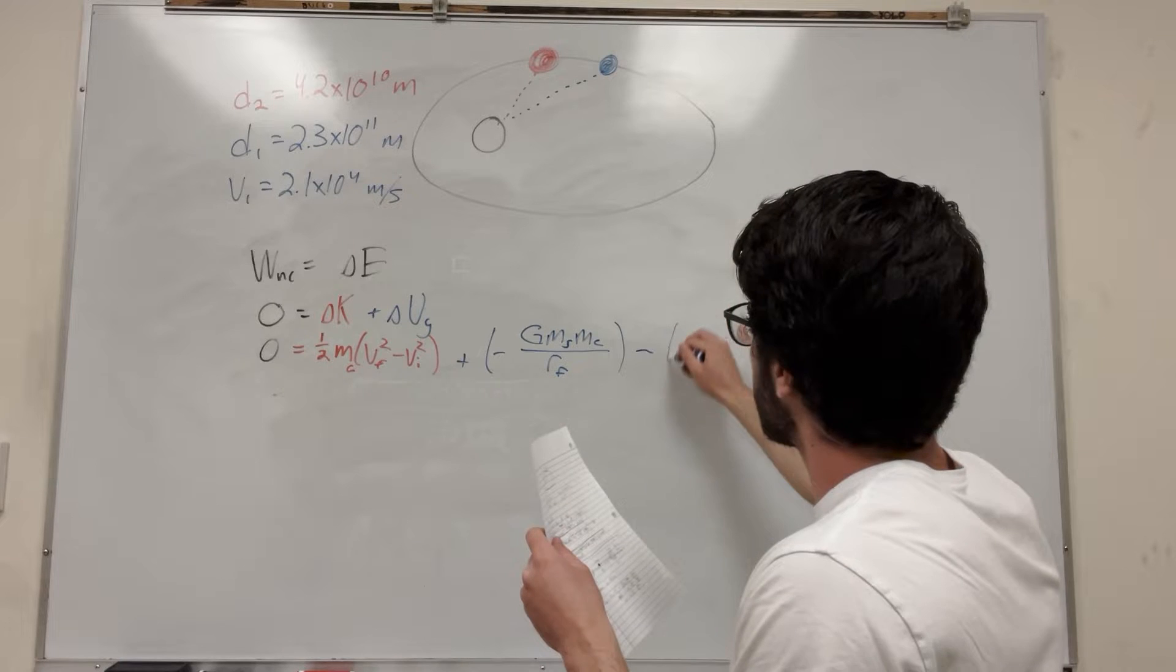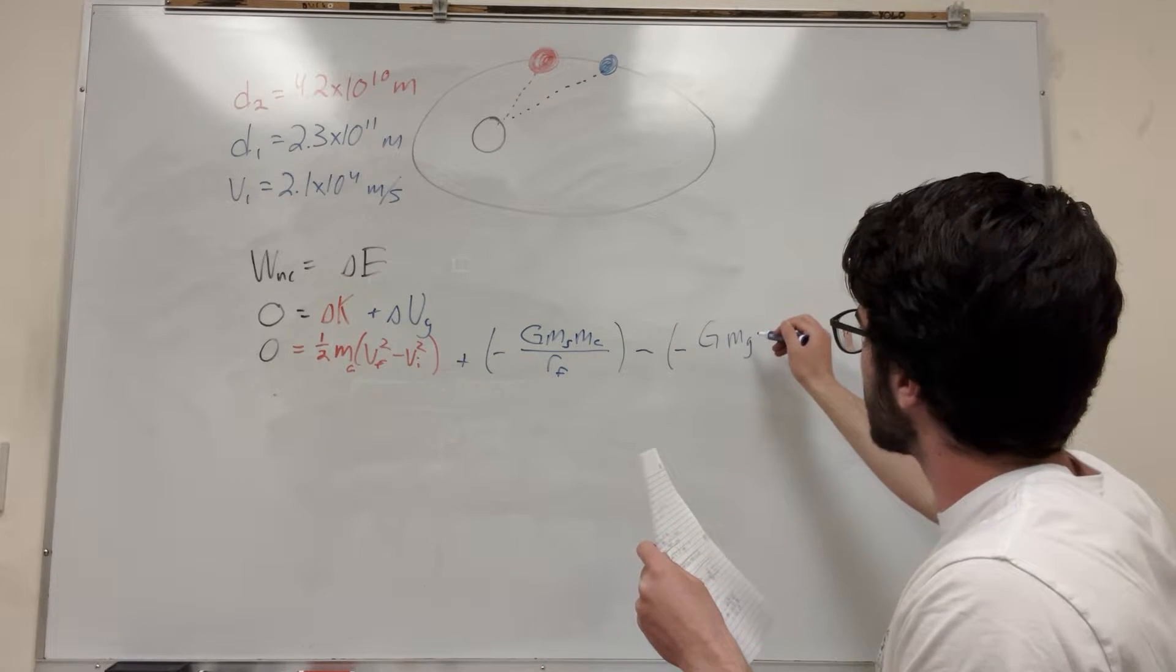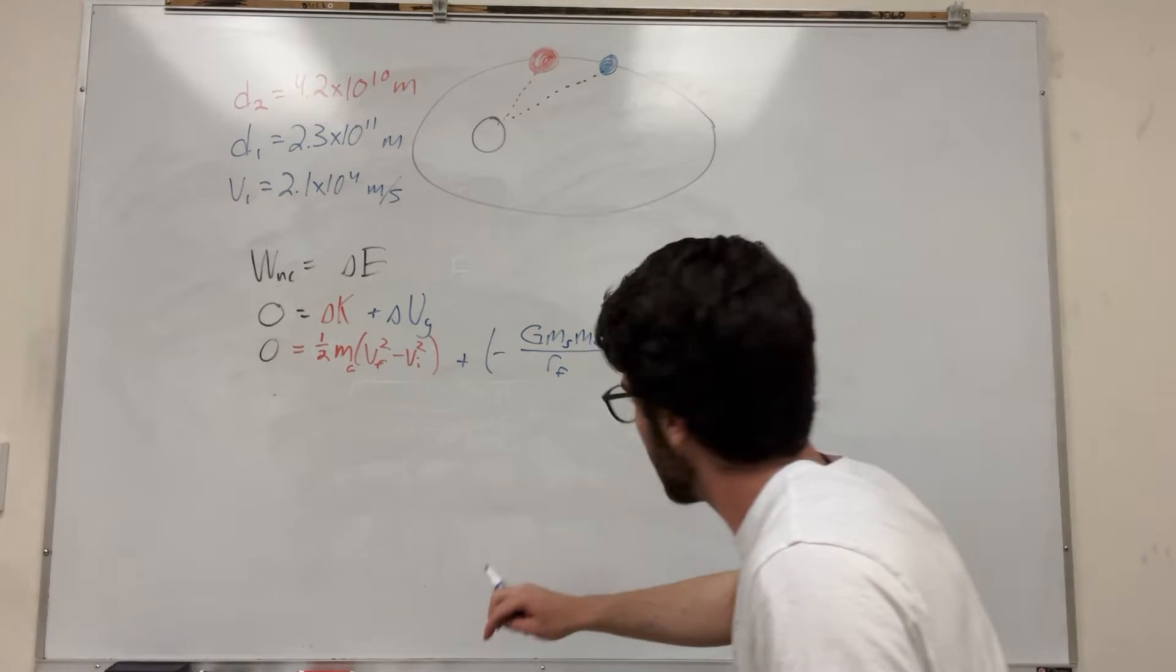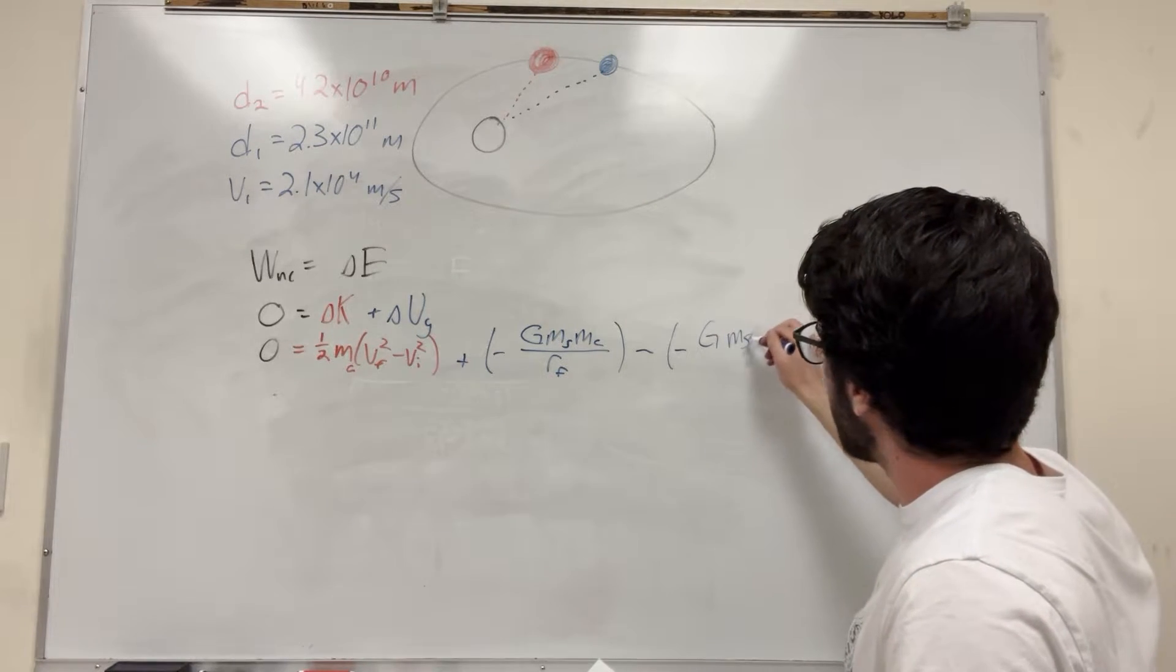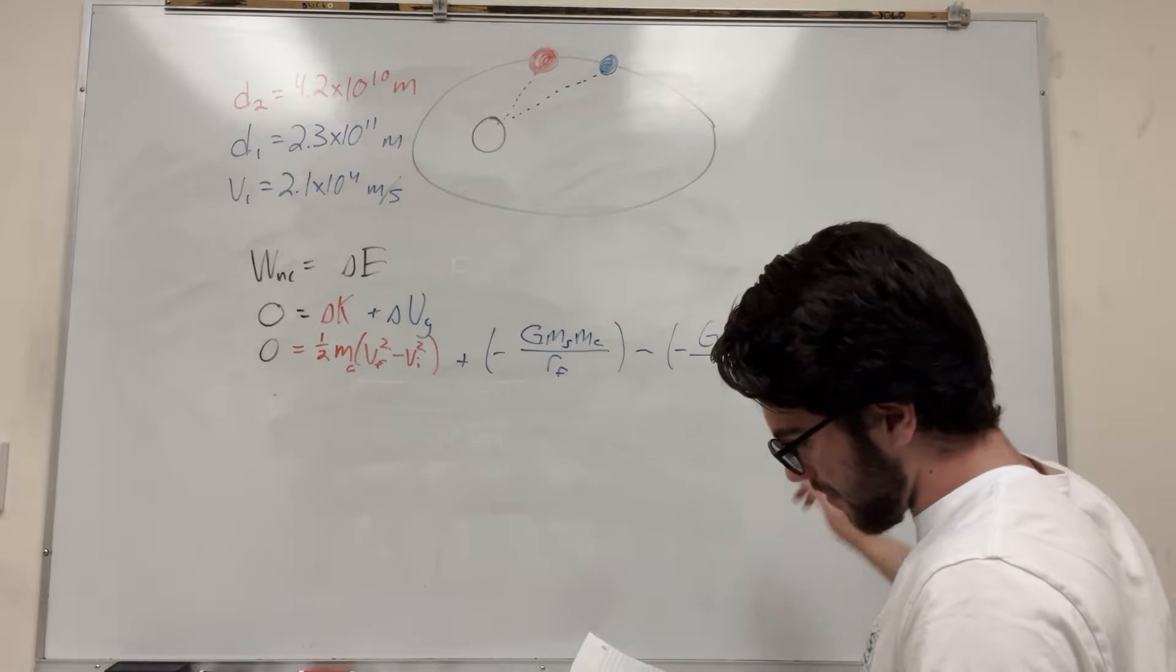It's the gravitational constant times the mass of the sun times the mass of the comet divided by a radius final, right? And then minus the negative, gravitational constant times the mass of the sun times the mass of the comet divided by a radius initial, right?